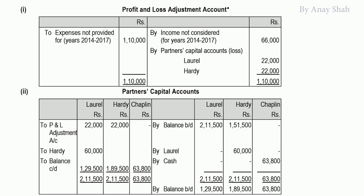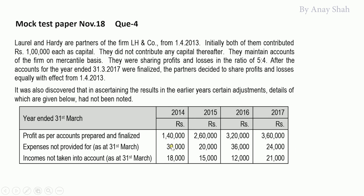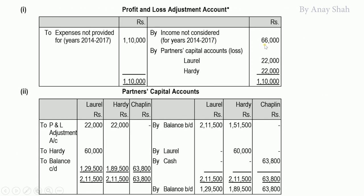In the P&L Adjustment account: expenses total 30,000 + 20,000 + 36,000 + 24,000; incomes total 18,000 + 15,000 + 12,000 + 21,000. Income total = 66,000; expense total = 1,10,000. Expenses are debited; incomes are credited. Since expenses exceed incomes, there is a net loss of 44,000. This net loss of 44,000 is divided equally — 22,000 each — as per the new profit sharing ratio.